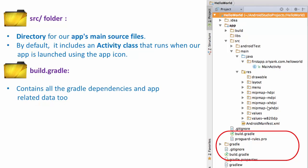Next comes the build.gradle file. This is the inner build.gradle file for our application module. There is also another build.gradle file outside of this module which we won't discuss for now. This Gradle file contains all the Gradle dependencies and application dependencies, the package name, the application version name, and so on. For now, just remember it contains the Gradle dependencies and app-related data.